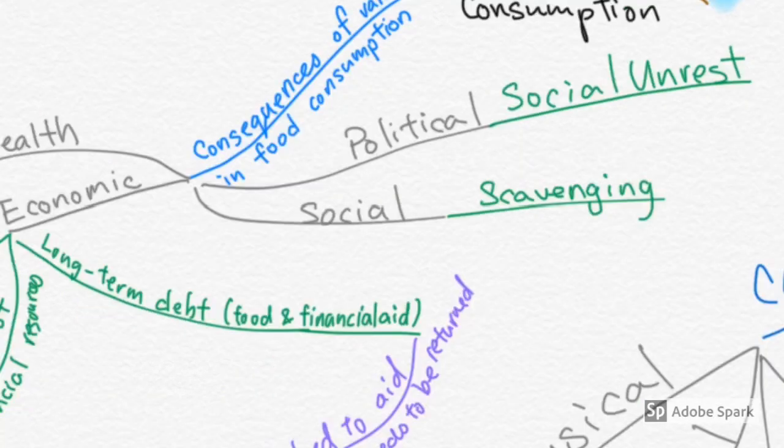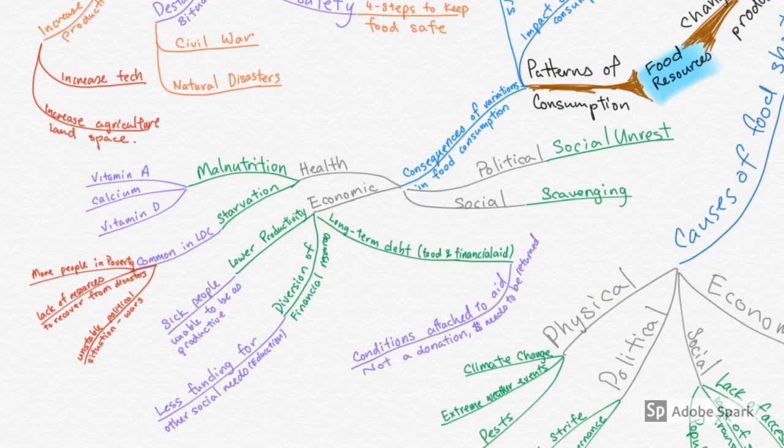The final two factors that we are looking at will be social and political. Political is tied a little bit to what we saw earlier with economic, where you have social unrest and as a result, you are unable to consistently get a constant amount of food for your people. For example, when you have cases where there is large social unrest, you may end up having scavenging as a key issue among your population. So these are your factors that you have to consider when you are thinking about consequences of variation in food consumption under patterns of consumption in food resources.